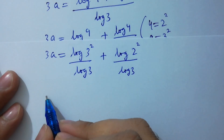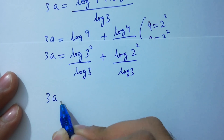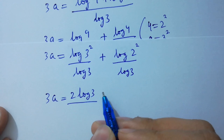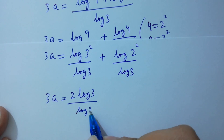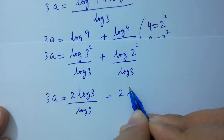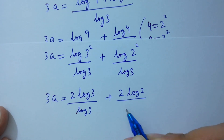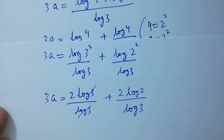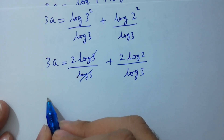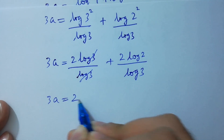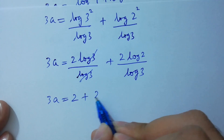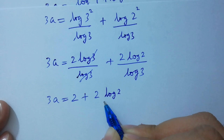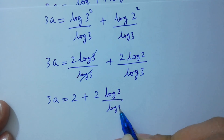So 3a equals 2 log 3 over log 3 plus 2 log 2 over log 3. Log 3 and log 3 cancel, giving 3a equals 2 plus 2 log 2 over log 3.